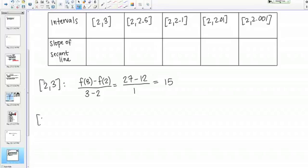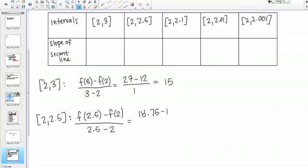Then we're just going to go down the line and calculate the rest of these slopes. I'm calculating the slope of the secant lines. This is f of 2.5 minus f of 2 over 2.5 minus 2. That gives me 18.75 minus 12 over 0.5, which equals 13.5.